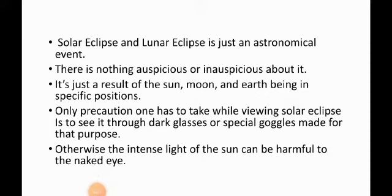Students, we should understand that a solar eclipse and a lunar eclipse are just astronomical events. There is nothing auspicious or inauspicious about them — what we call shagun or apsagun. It is simply the result of the sun, moon, and earth being in a specific position. The only precaution one has to take while viewing a solar eclipse is that we must see it with dark glasses or special goggles made for this purpose; otherwise the intense light of the sun can be harmful to the naked eyes.